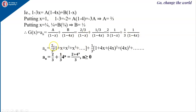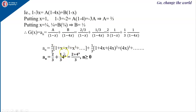We know that 1/(1−x) is the generating function for 1 + x + x² + ..., i.e., for 1^n, and 1/(1−4x) is the generating function for 4^n. Therefore a_n = (2/3)·1 + (1/3)·4^n = (2 + 4^n)/3 for n ≥ 0.